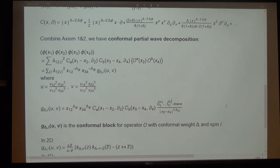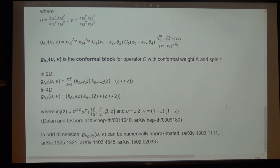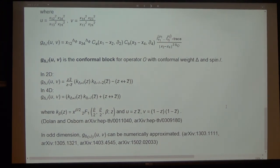In 2D and 4D, you can actually compute the conformal block in terms of hypergeometric functions. What you do is first show the conformal block satisfies a Casimir equation, then by solving it you can rewrite the Casimir equation as a hypergeometric equation and find the solution. But the key point is we actually don't need this explicit form — all we need to know is that those conformal blocks can be numerically approximated, and I will show you how.